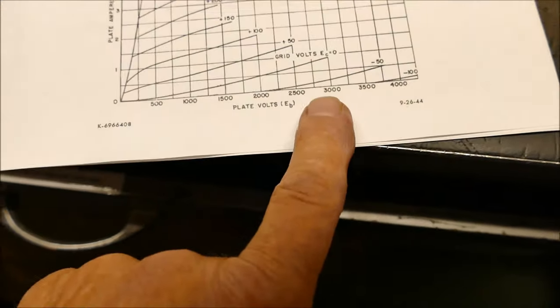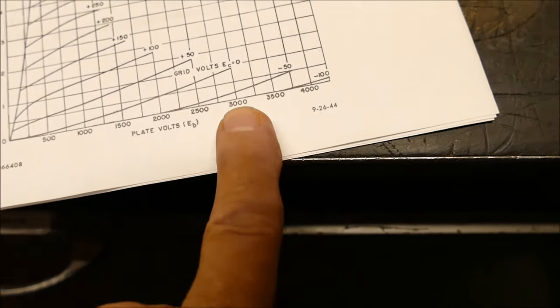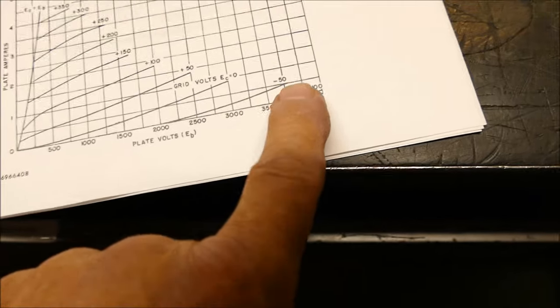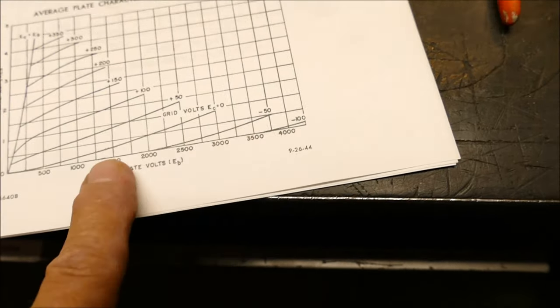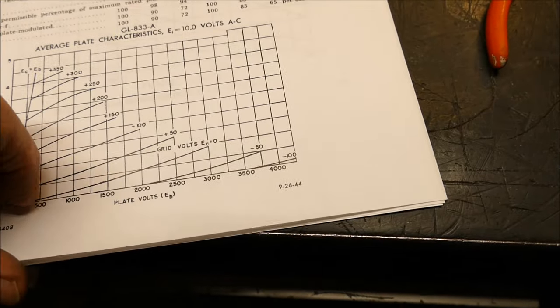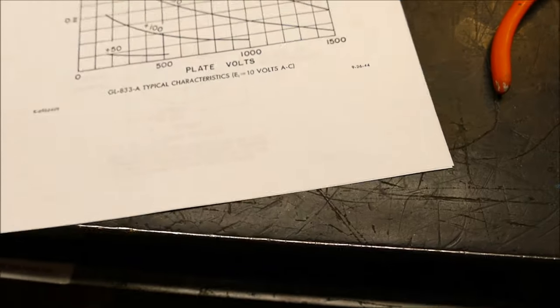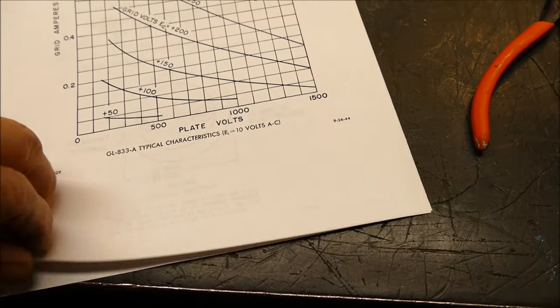But here's something that I think we can work with right here. Here's where the rubber meets the road. At 3000 volts and minus 50 volts on the grid right there, we have a pretty linear characteristic curve. So that's what we're gonna do. We're gonna run 3000 volts on it at minus 50 volts, typical plate characteristics.